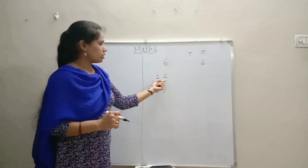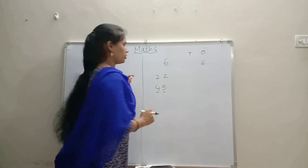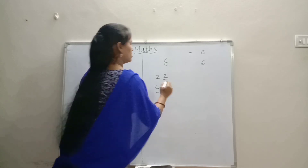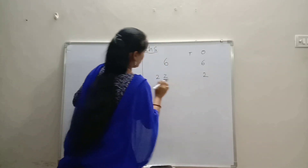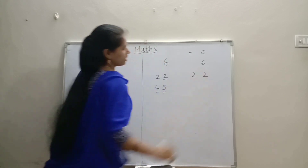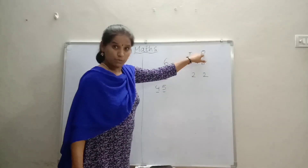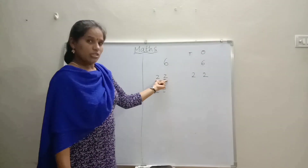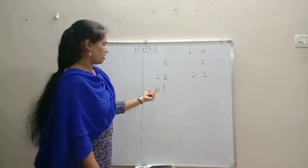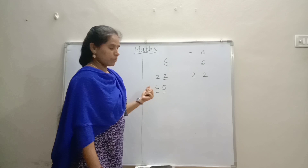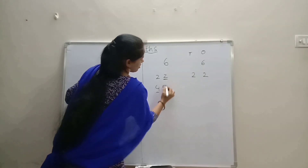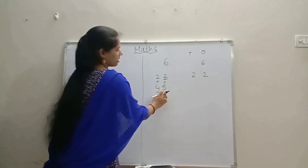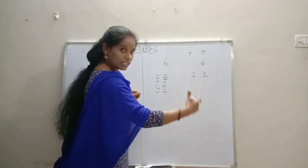Then, here, number 22. See this number — this two is in the ones place and one more two is in the tens place. Why? Because this is a two-digit number, right? And one more number, number 45. See, first number is always ones and the second number is tens, right? Because we are starting from the right side only.